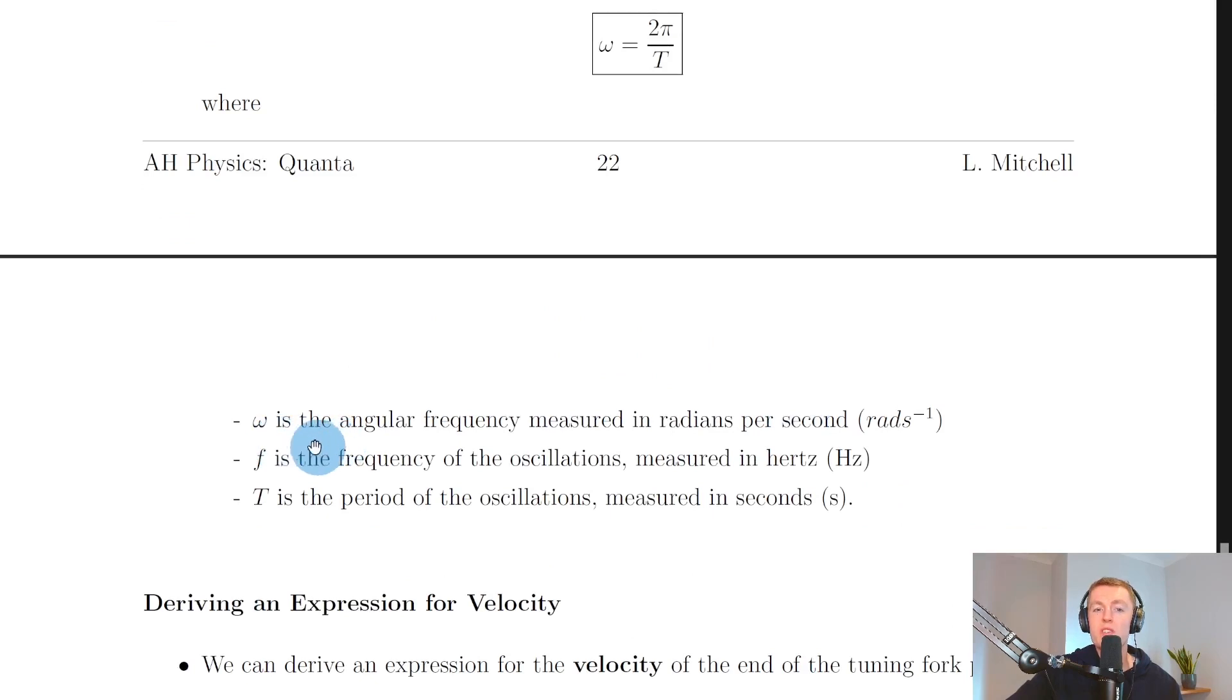Here's what the symbols mean. Omega is the angular frequency measured in radians per second, f is the frequency of the oscillations measured in hertz, and capital T is the period of the oscillations measured in seconds.